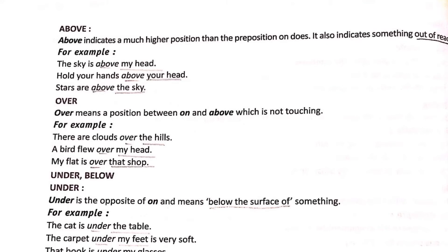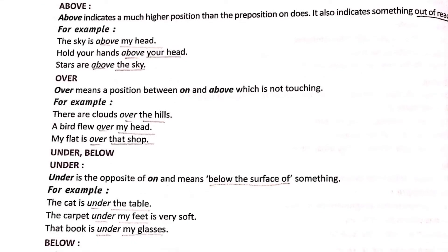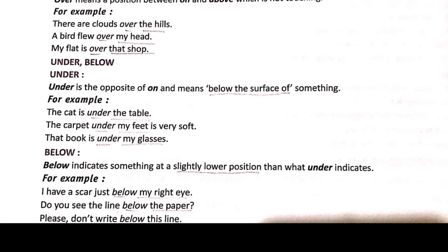Then comes 'under' and 'below'. Both show the sense of downwards. Under is the opposite of 'on' — it means below the surface of something, covered by it. For example: 'The cat is under the table' — the table covers the cat. 'The carpet under my feet is very soft.' 'That book is under my glasses.'